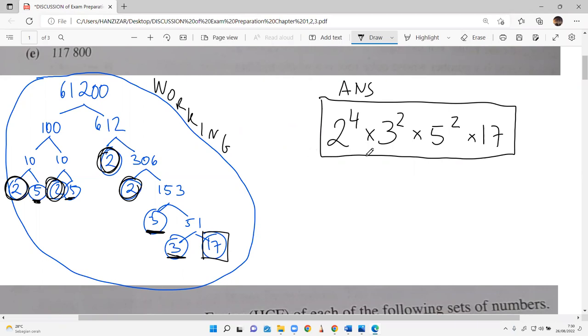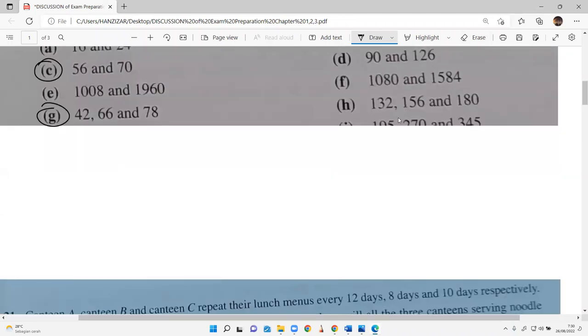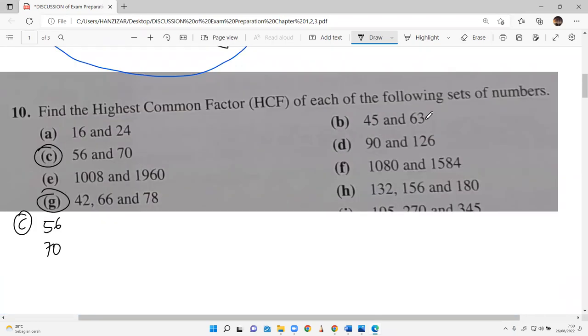If you want to take notes, take notes, but if you don't, no problem, you get the video later. Now 10C and G: we have to find the HCF of each set of numbers. 56 and 70. You are finding the HCF, so what is the characteristic of HCF? You pick the smallest power, the lower power.